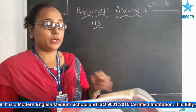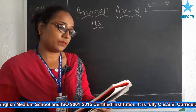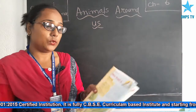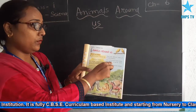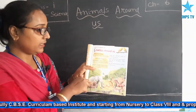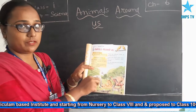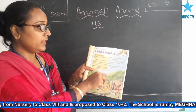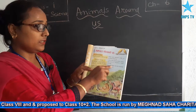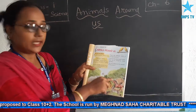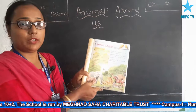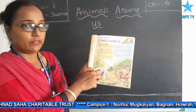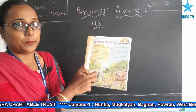Let us learn what animals are around us. There are different kinds of animals around us. Look at the picture given below and try to recognize these animals. Can you name any 4 animals in the picture? We can recognize this elephant — elephant is a big animal.